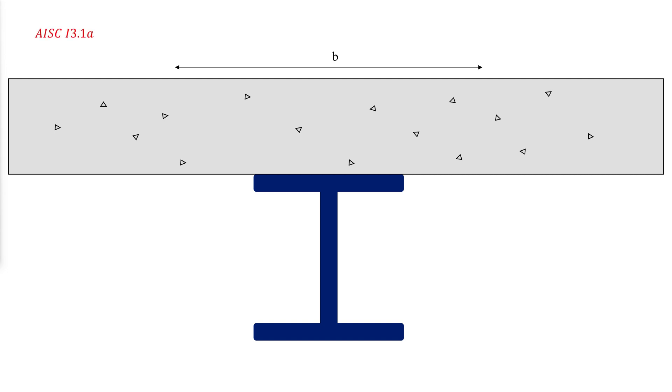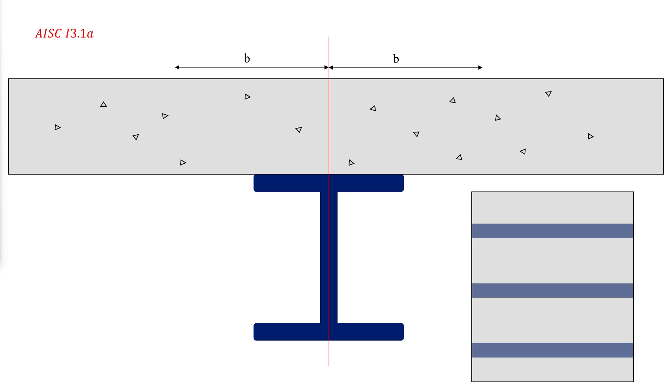AISC I3.1a requires that the effective width of the floor slab on each side of the beam centerline be taken as the smallest of 1/8 of the span length, or 1/2 of the distance to the centerline of the adjacent beam.